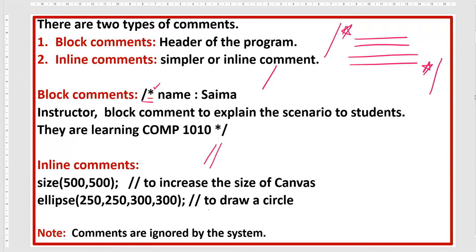When viewers read the comments, they can easily understand what is the purpose of your functions. The purpose of this function is to draw a circle; the purpose of this function is to increase the size of the canvas. Also note that comments are ignored by the system when we run the program.